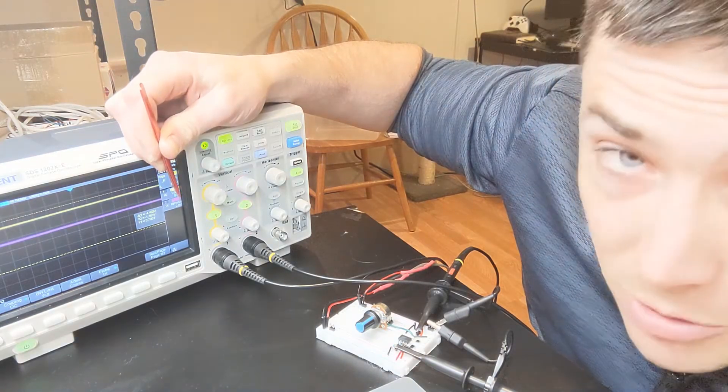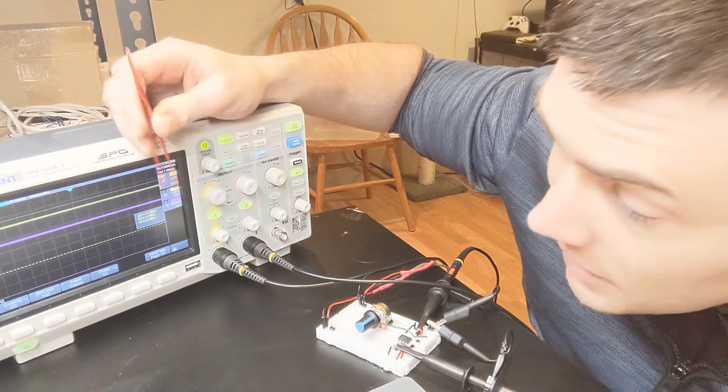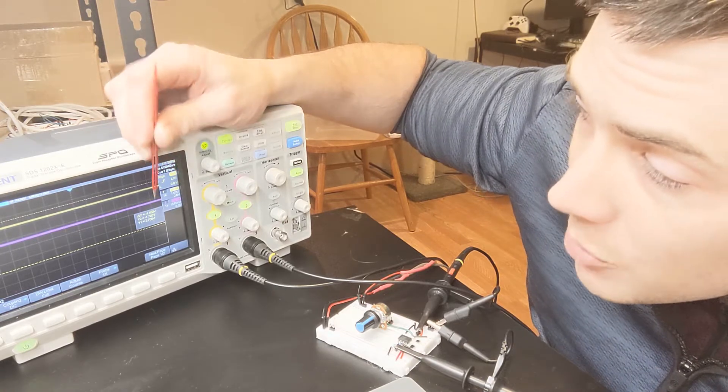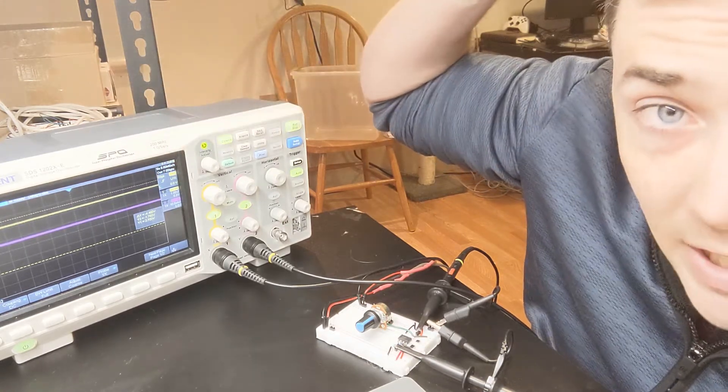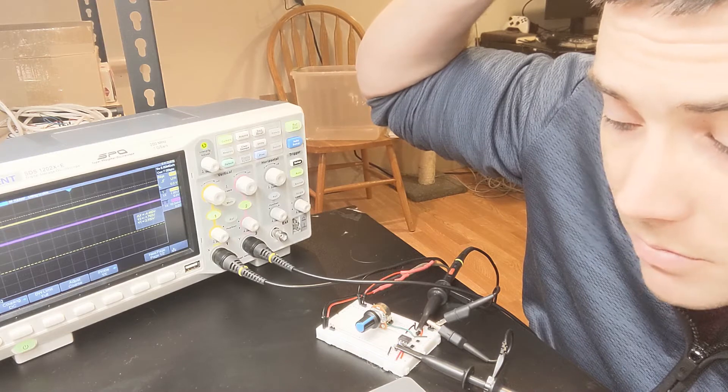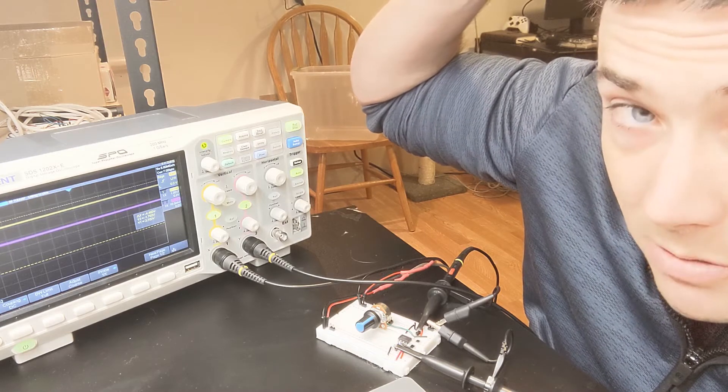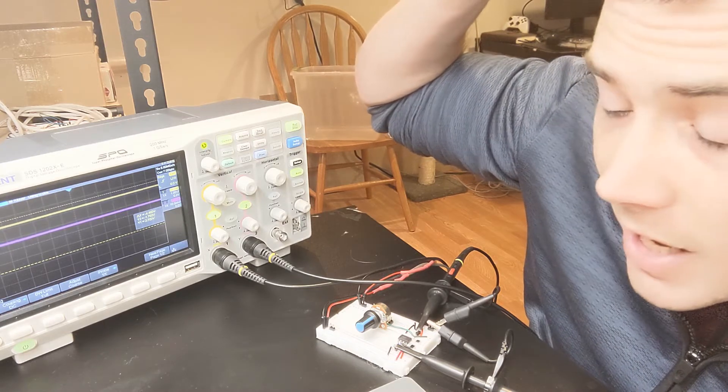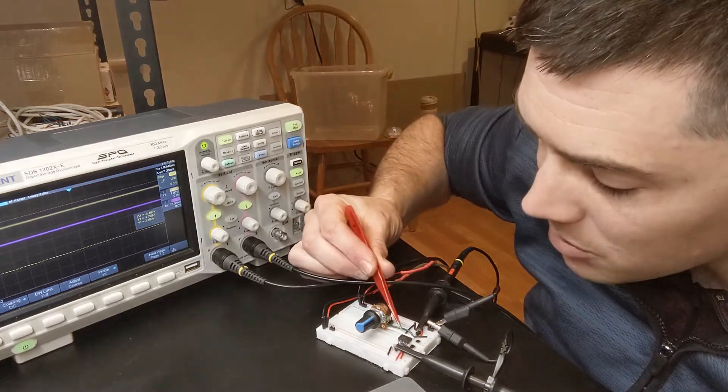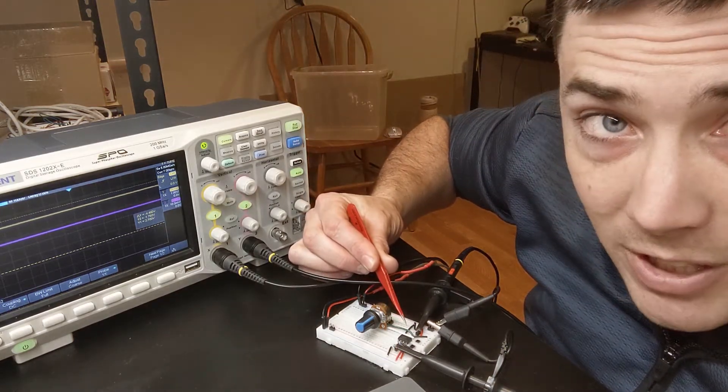So that's a hundred, a factor of a hundred different in the scale bars, to give you an idea of how much gain the other photodiode is getting. And the chip I'm using here is called an LM358.